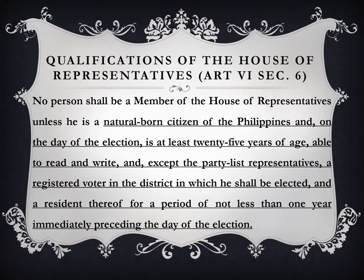How about the qualifications of the House of Representatives? Article 6 provides that no person shall be a member of the House of Representatives unless he is a natural-born citizen of the Philippines. The difference from the Senate is the age requirement — the House of Representatives must be at least 25 years of age on the day of the election, while senators must be at least 35. The other qualifications are the same.